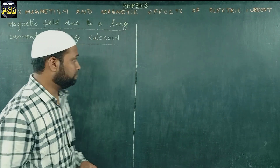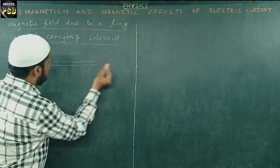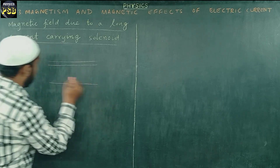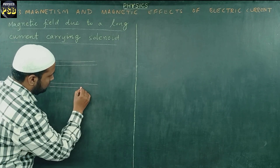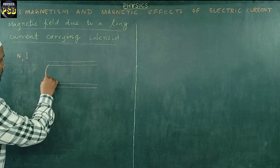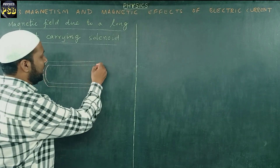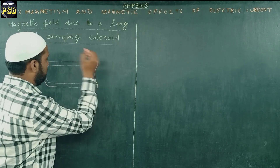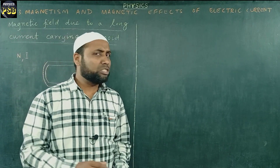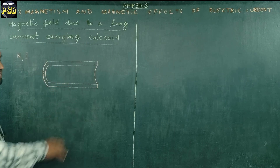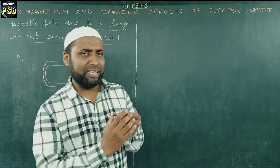I take one such solenoid. This solenoid has got a number of turns, and the current I flows through it. A solenoid is nothing but a closely wound helical coil. What I have shown here is nothing but part of the solenoid. If we cut the solenoid along its length, it may appear something like this.